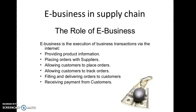E-business in supply chain: the role of e-business. E-business is the execution of business enabled by the internet. The first role is providing product information. Nowadays companies can make product information reach customers through their web portal or website, or through social networking sites like Facebook, Twitter, and Instagram. There are various ways to make product information reach customers very fast in a shorter time.